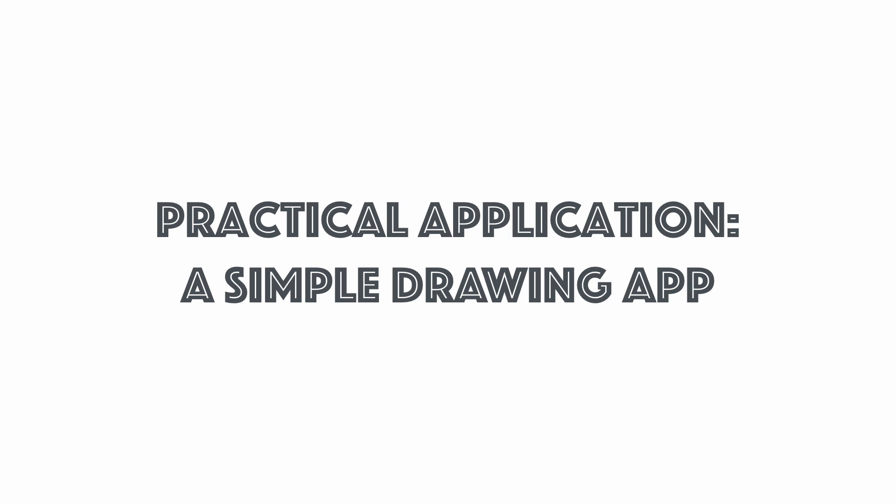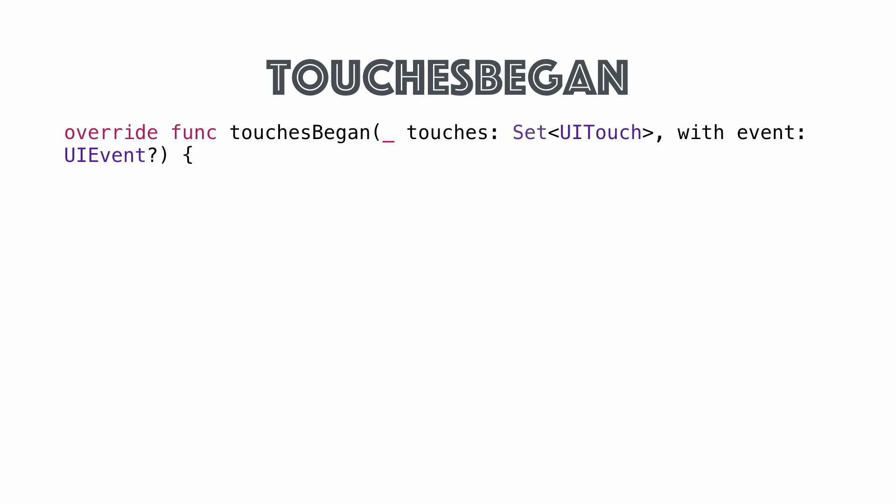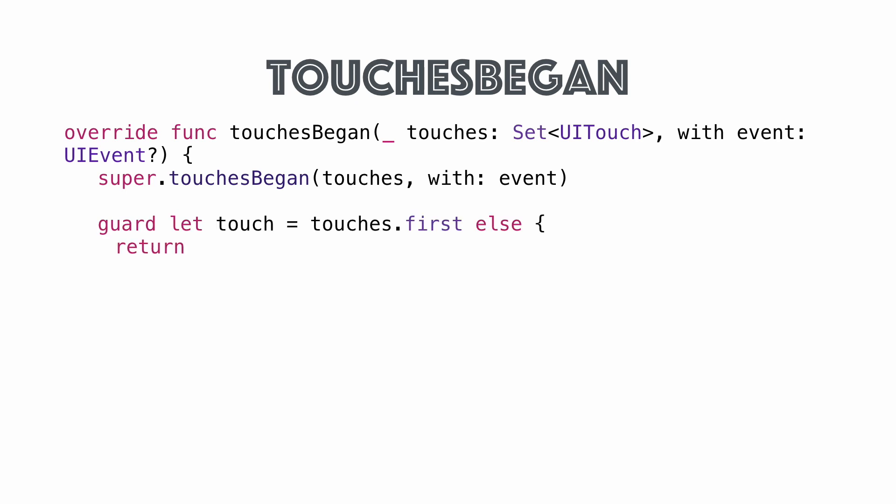Now we've seen the various components of what a BézierPath is, how to use the UIBézierPath object to express and draw it. Let's do something more practical — let's create a simple drawing app. We'll begin in touchesBegan: override touchesBegan, call super, and make sure we have a UITouch object.